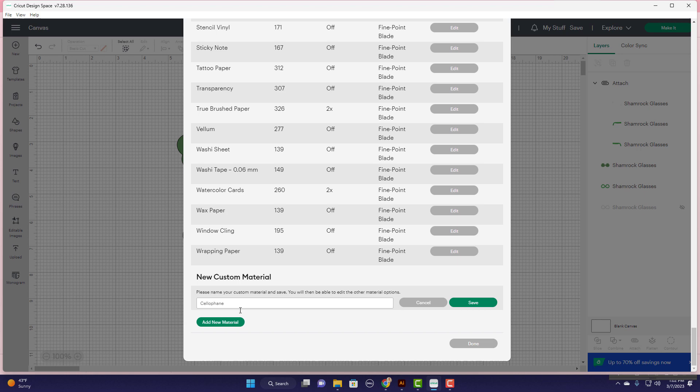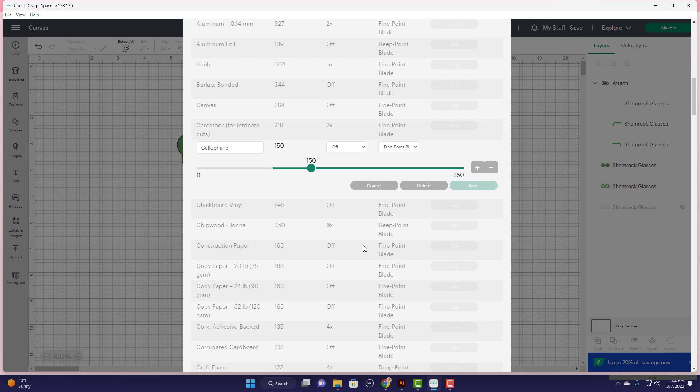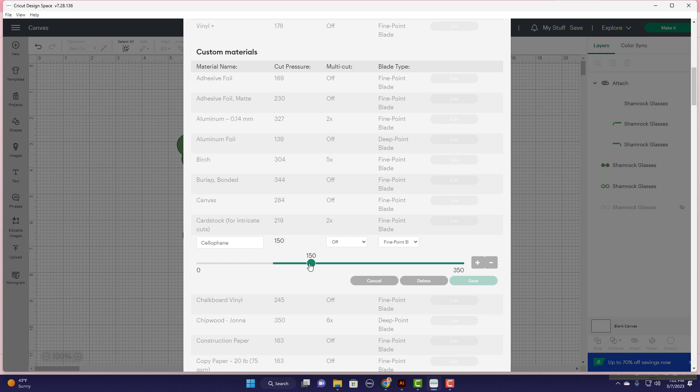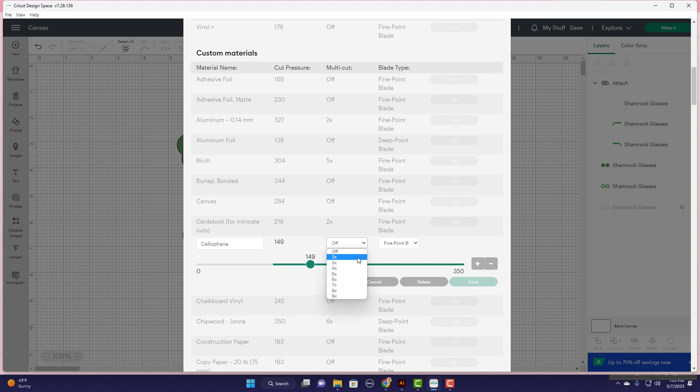And the great thing about this is once you set it up you will always have it. We are going to save that and then it's going to ask me what my cut pressure is going to be and I actually want it to be 150 but it won't let me save at 150 for some weird reason so I'm going to go with 149. And then next to it, this is how many times should it pass, and we're going to do two times and the fine point blade is great.